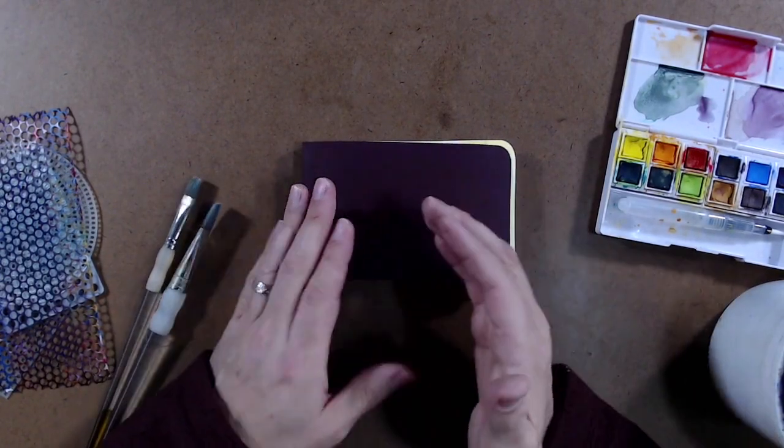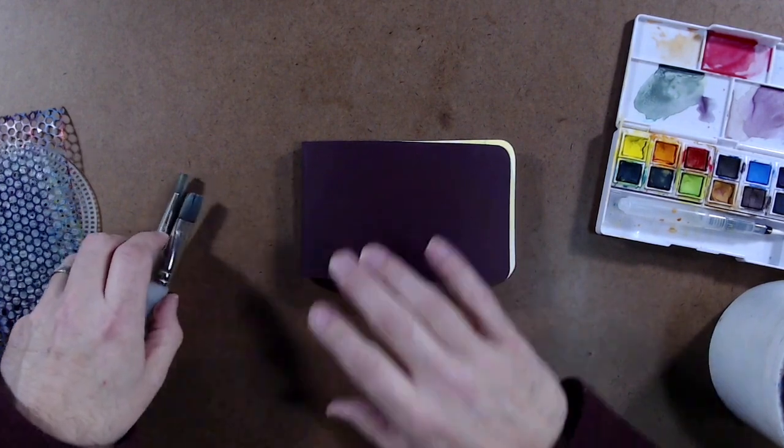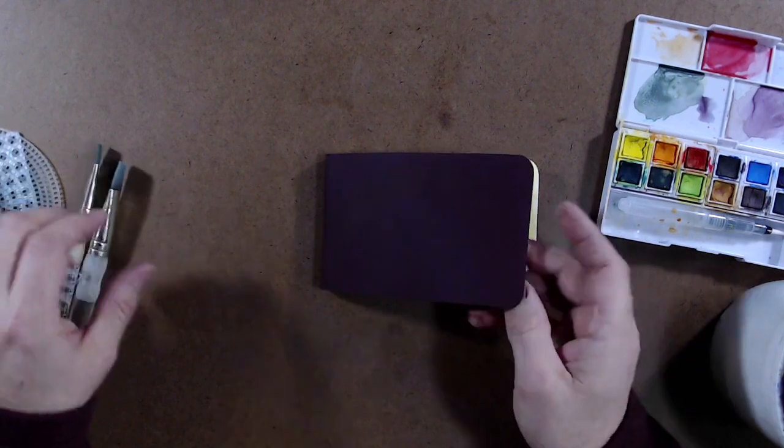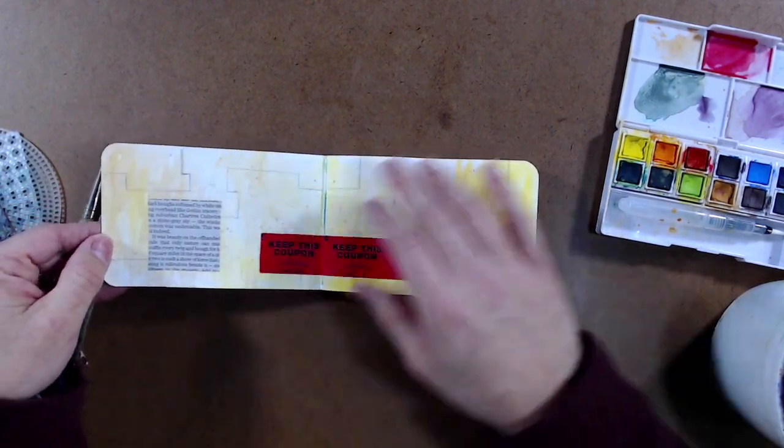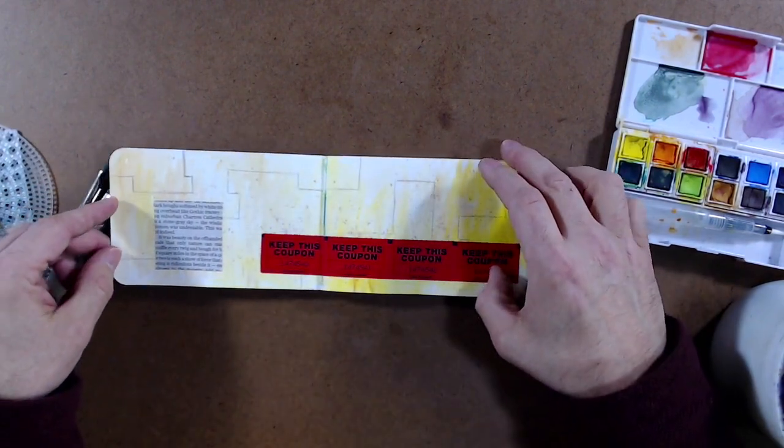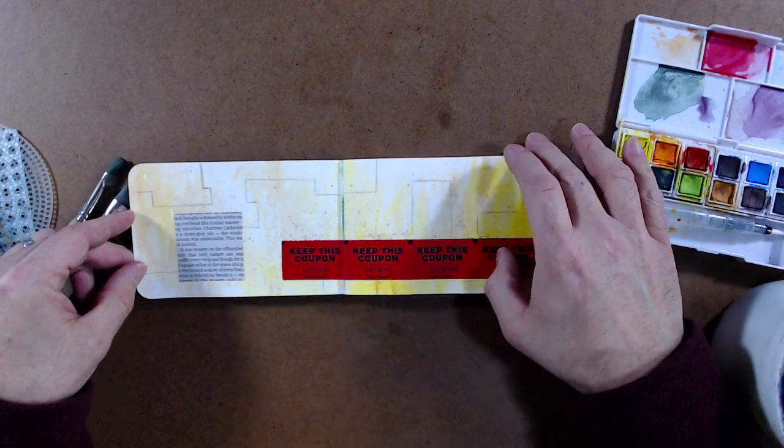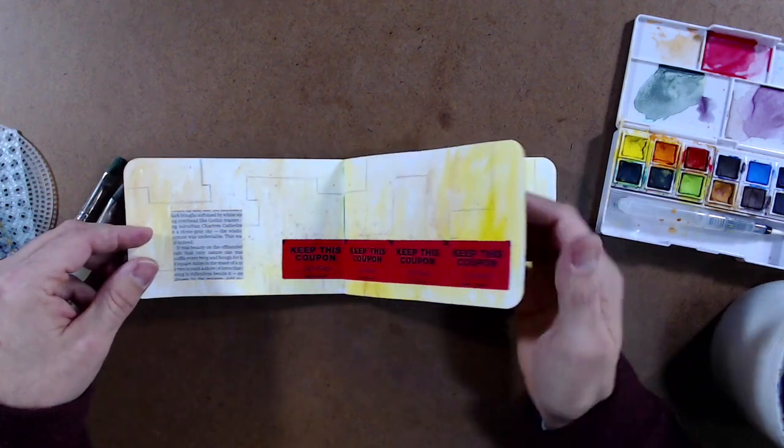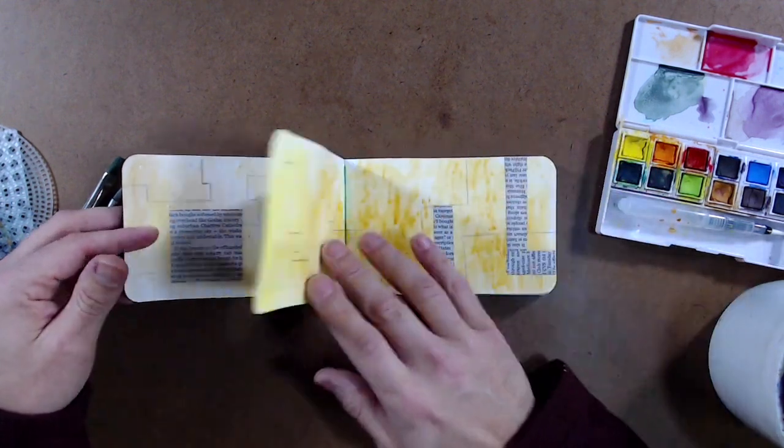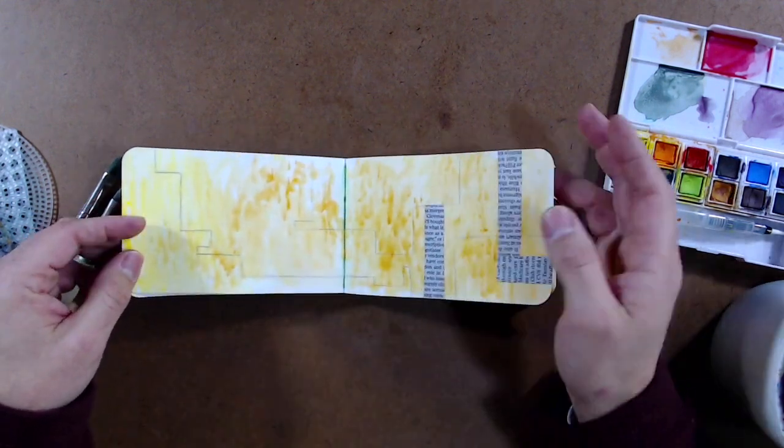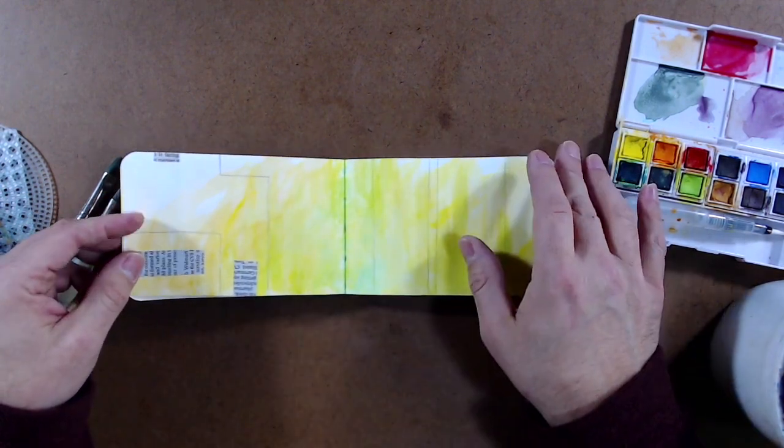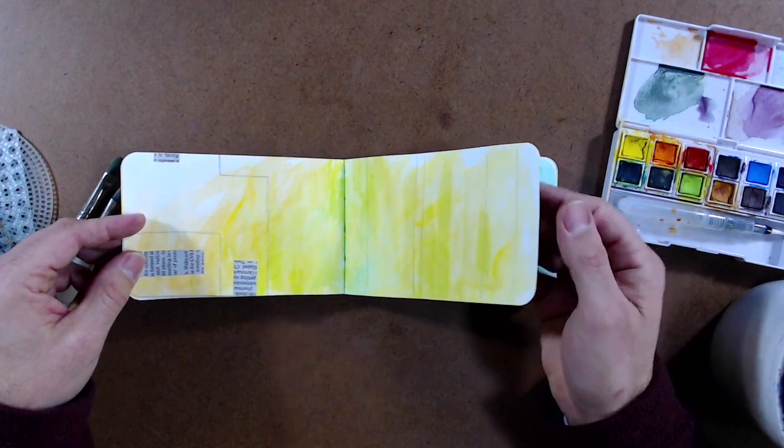I got this little book and I've already started working in it, but I want to show you the format of it. It's three and a half by five and a half, so when I open it it becomes three and a half by eleven which is a really interesting format. I've already started doing some work in it and I'll catch you all up.